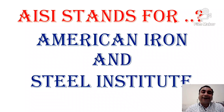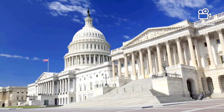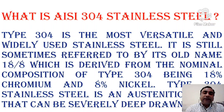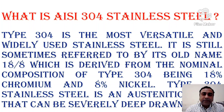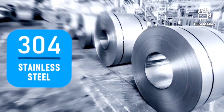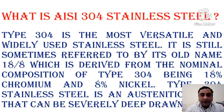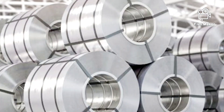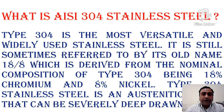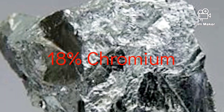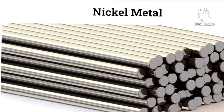AISI stands for American Iron and Steel Institute. AISI 304 stainless steel is the most versatile and widely used stainless steel. It is sometimes referred to by its old name 18/8, which is derived from its nominal composition of 18% chromium and 8% nickel.